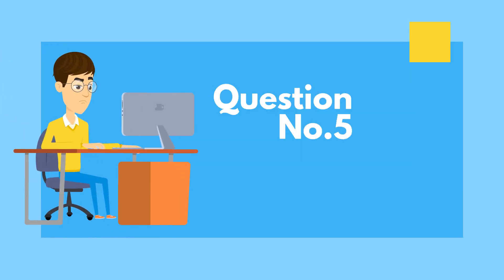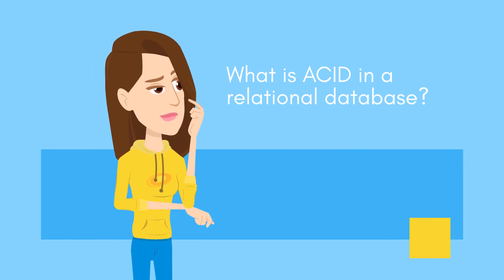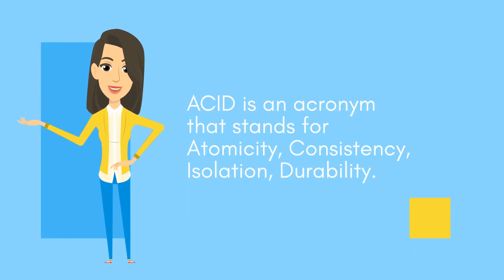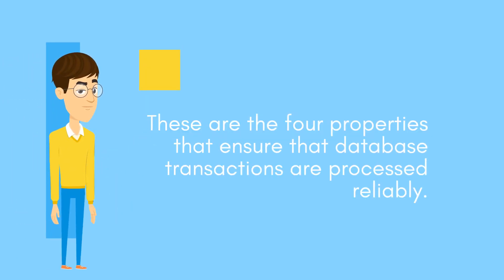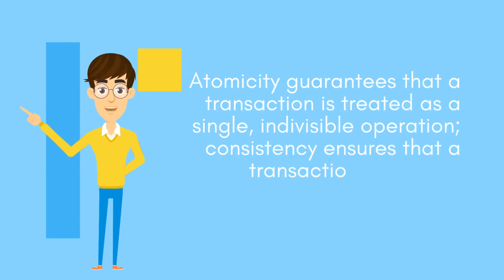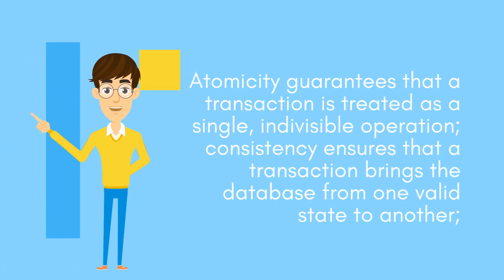Question number five: What is ACID in a relational database? ACID is an acronym that stands for Atomicity, Consistency, Isolation, and Durability. These are the four properties that ensure that database transactions are processed reliably. Atomicity guarantees that a transaction is treated as a single, indivisible operation.